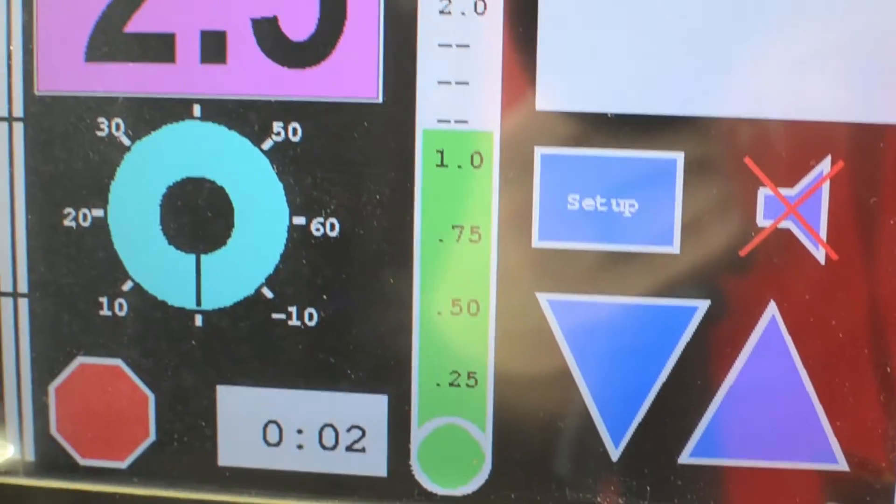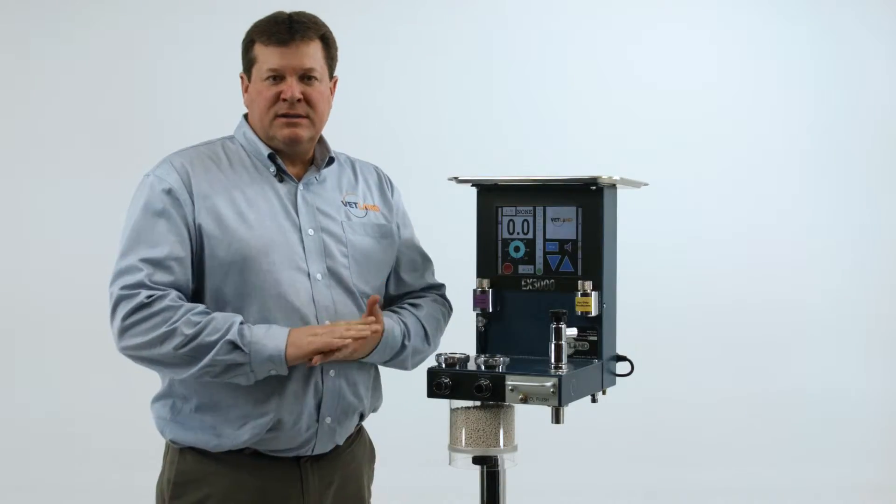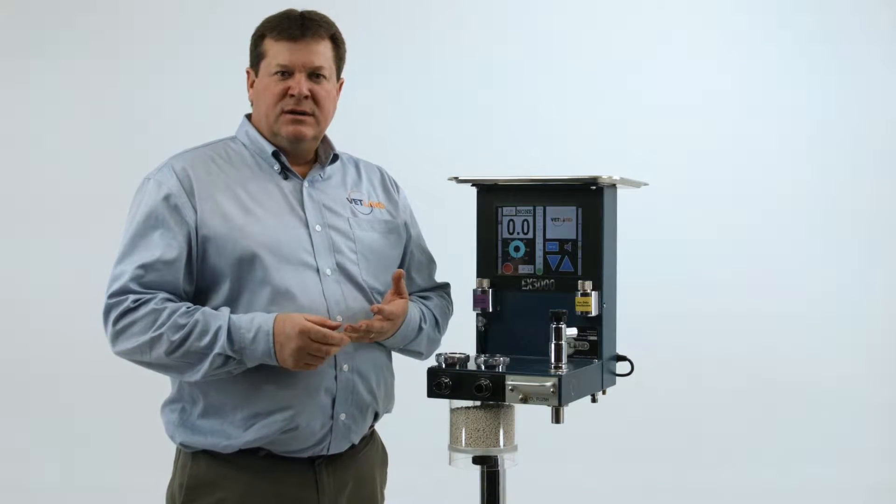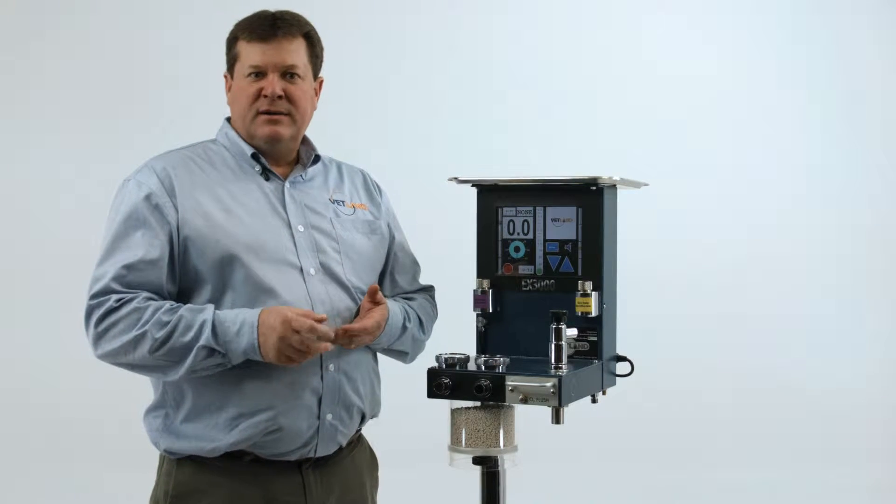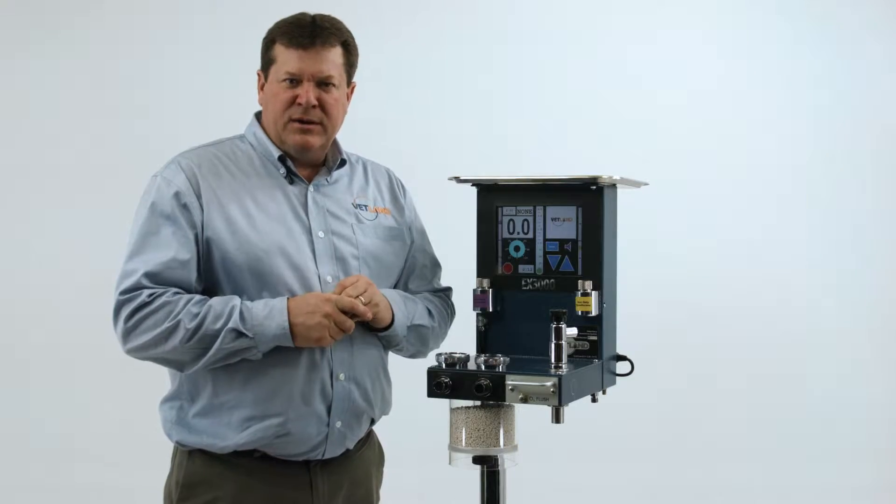This machine was born out of a desire to create a safer system. The top five things that lead to accidents and injury under anesthesia are excessive pressure to the lungs, excessive anesthetic, lack of oxygen to the brain, lack of CO2 removal, and foreign matter entering the airway.